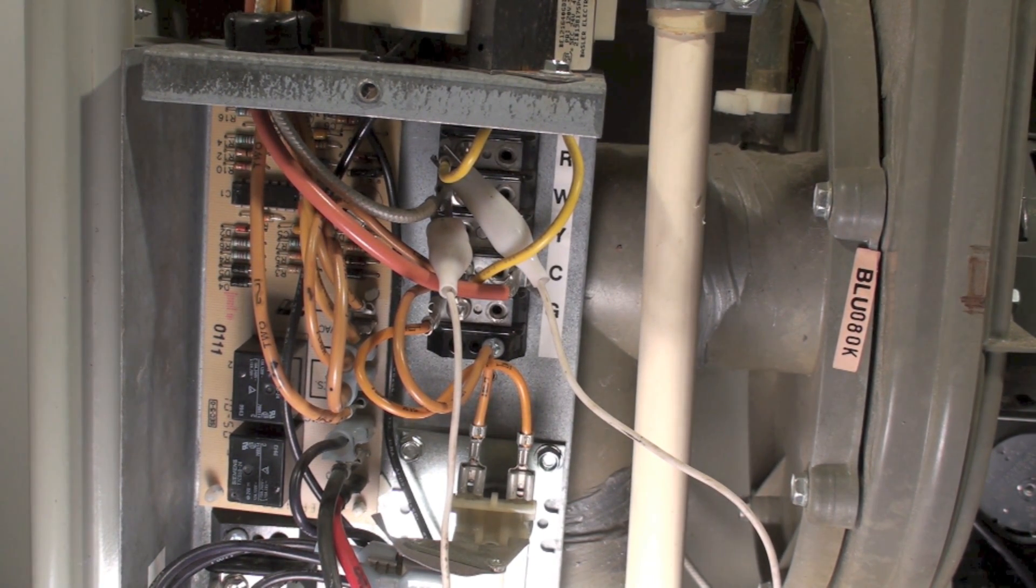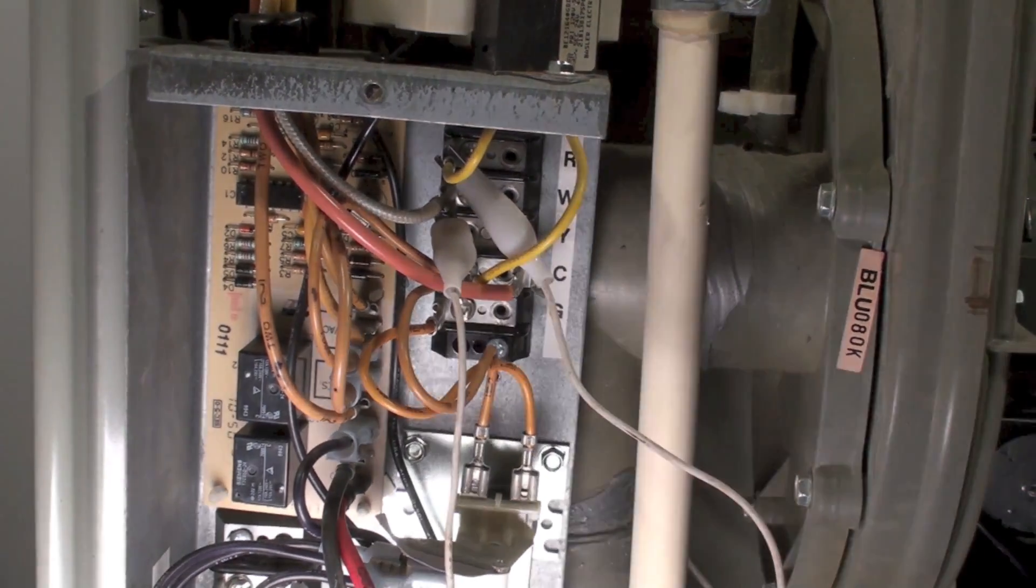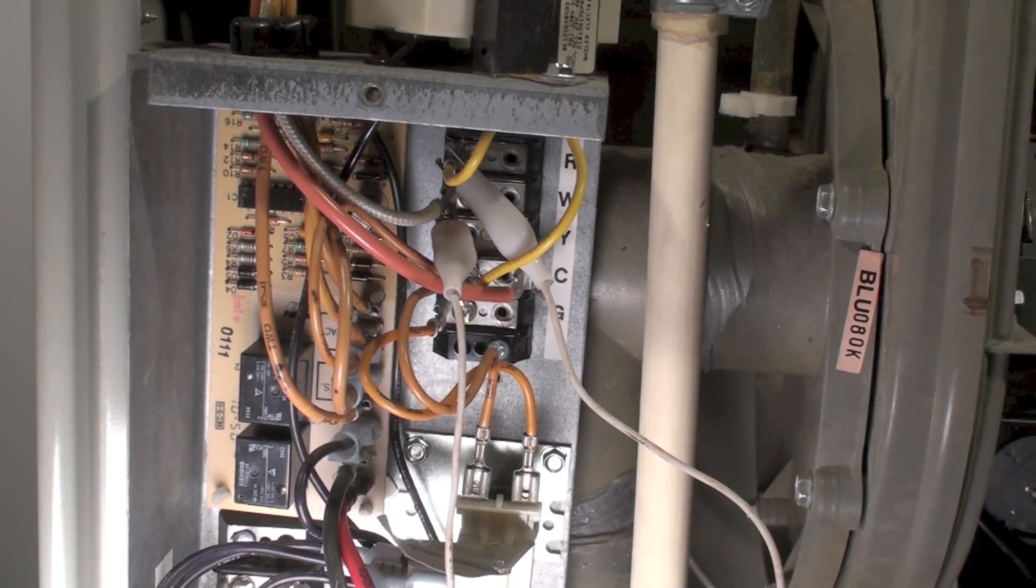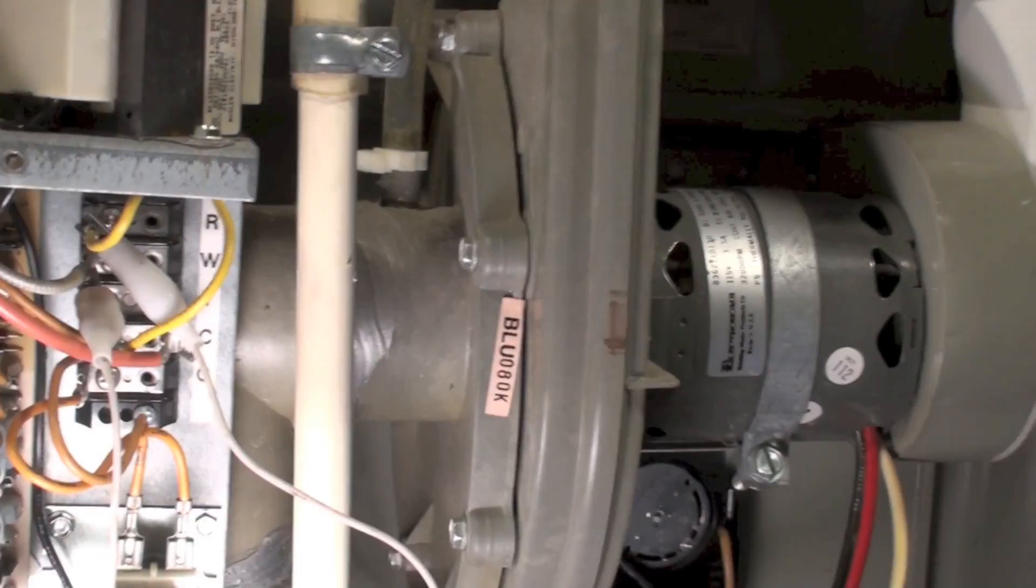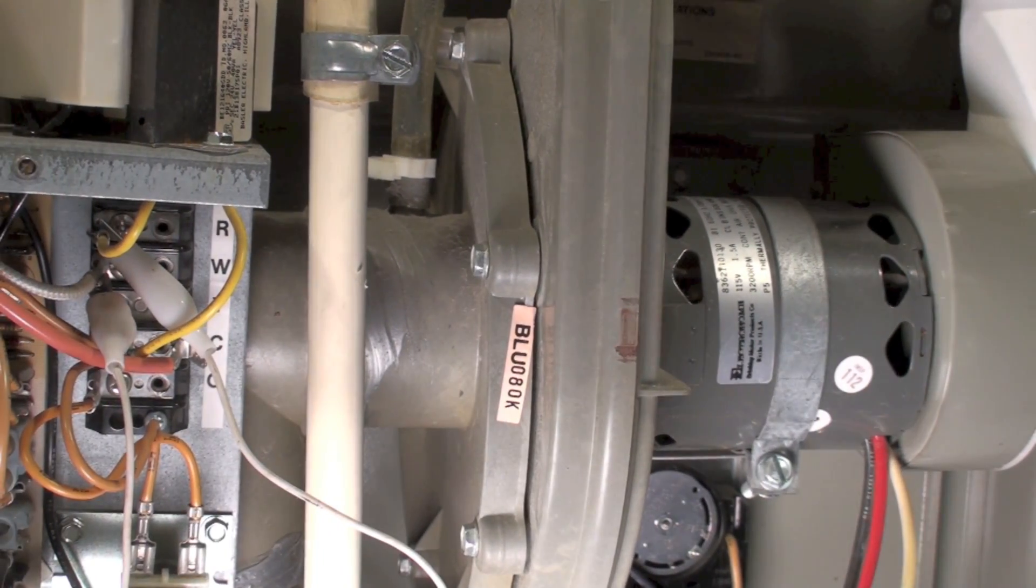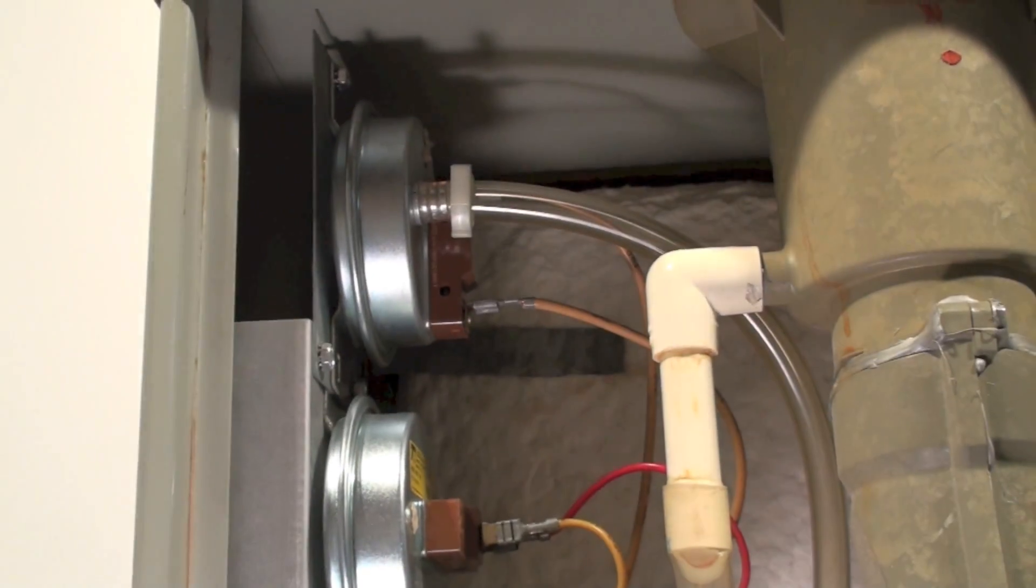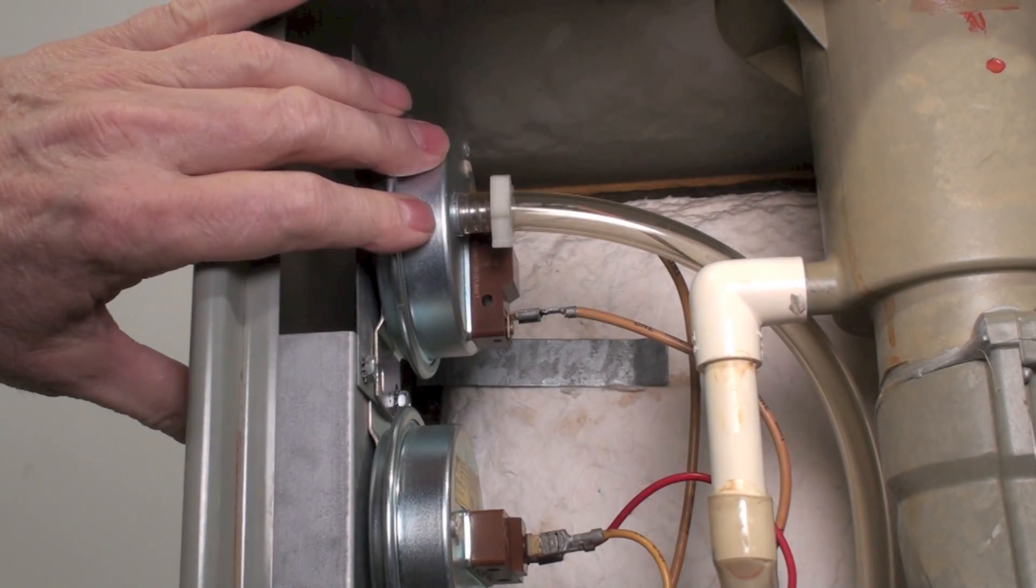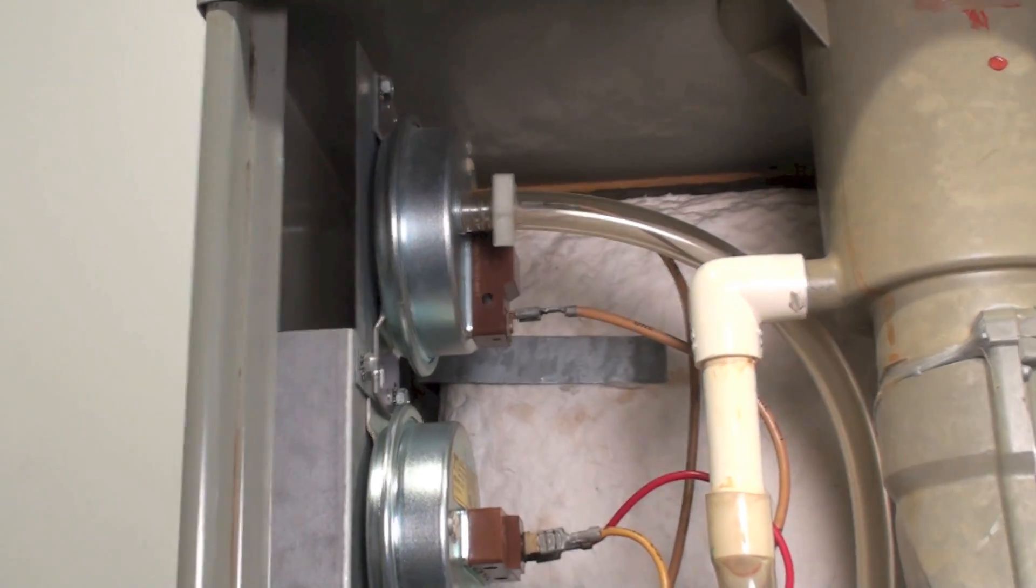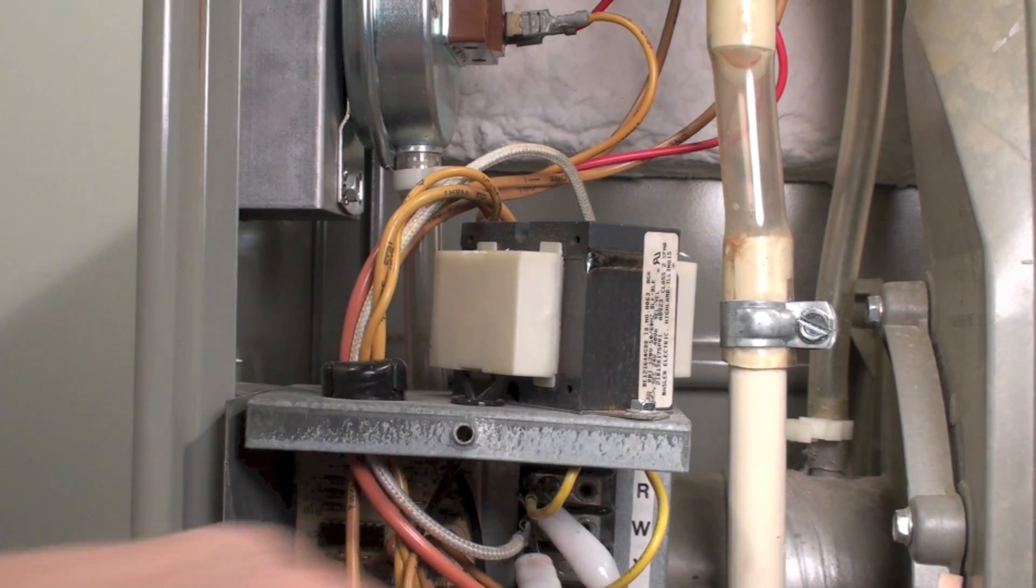I'm going to explain how that works. When power gets to this little board, it turns on high speed of the inducer, which is right there. Then we have this pressure switch hooked right to the inlet. See, it goes right to the inlet of the inducer.